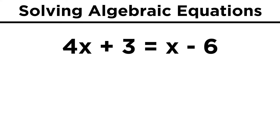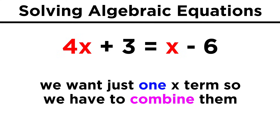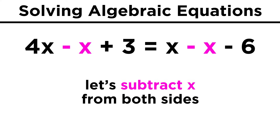Now let's try another one. Here we have 4x + 3 = x - 6. We can see that since there is now more than one x term, we will need to perform operations to get a single x term by itself in order to solve the equation. When we have several terms like this, our strategy should be to do whatever we need to do to get all of the x terms together first. In this case, the easiest way to do that is to subtract x from both sides.